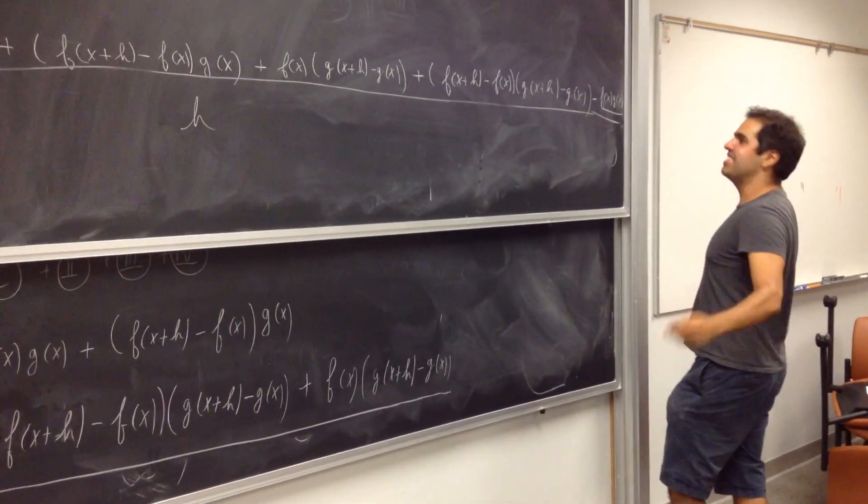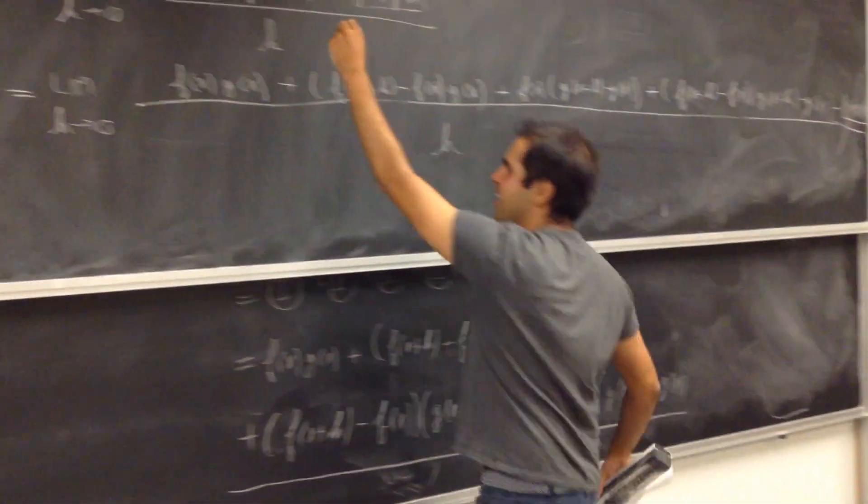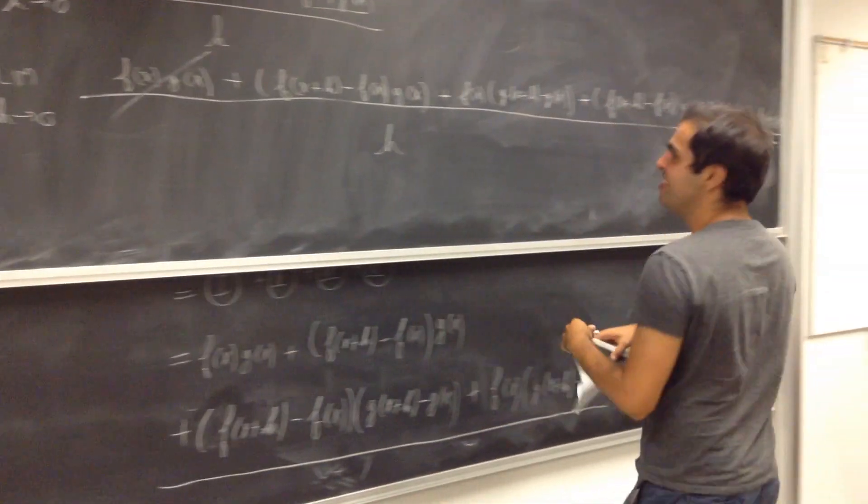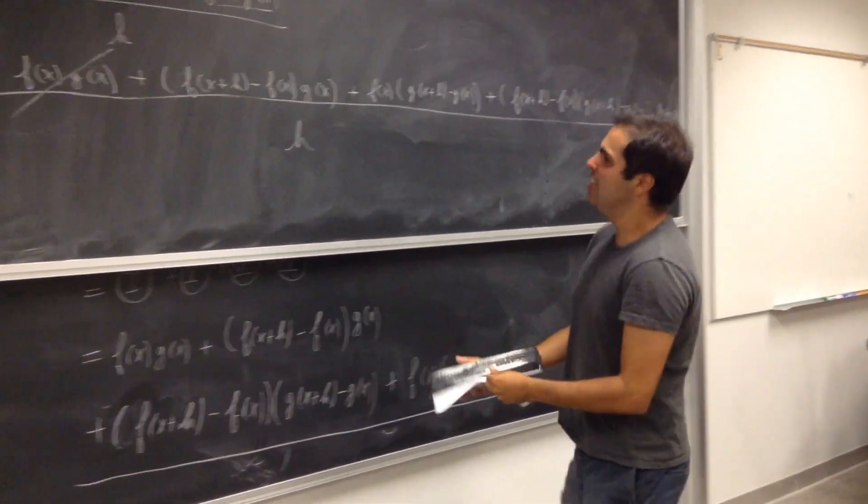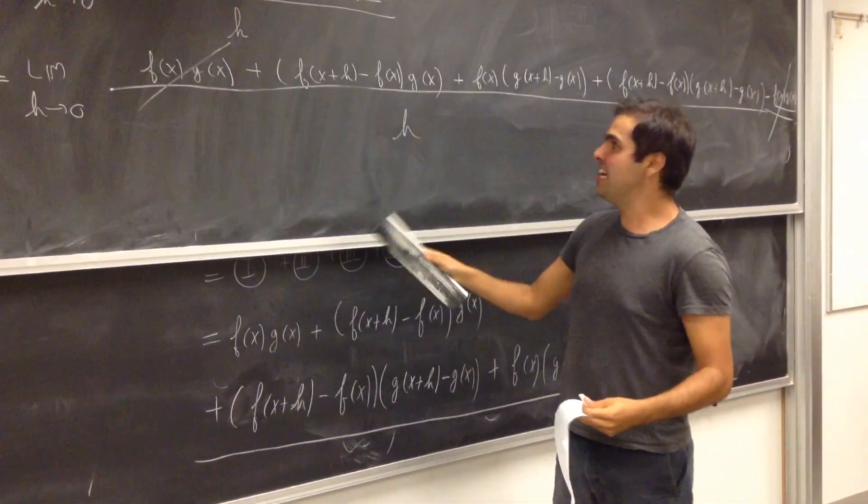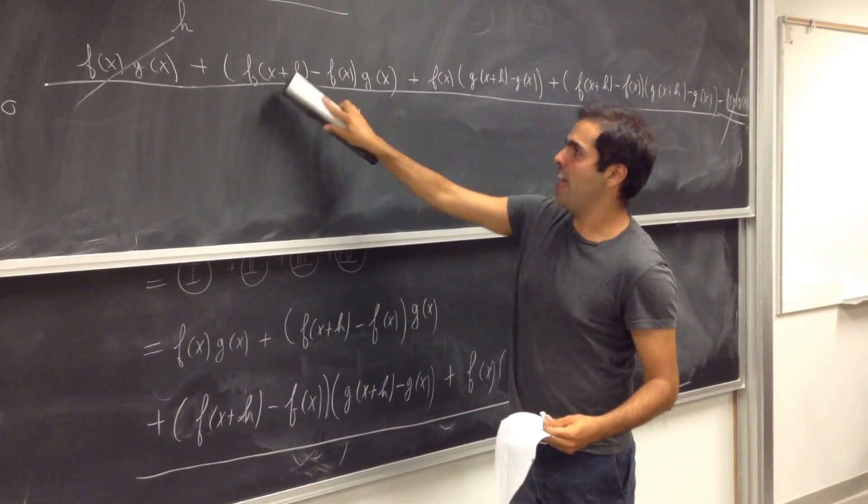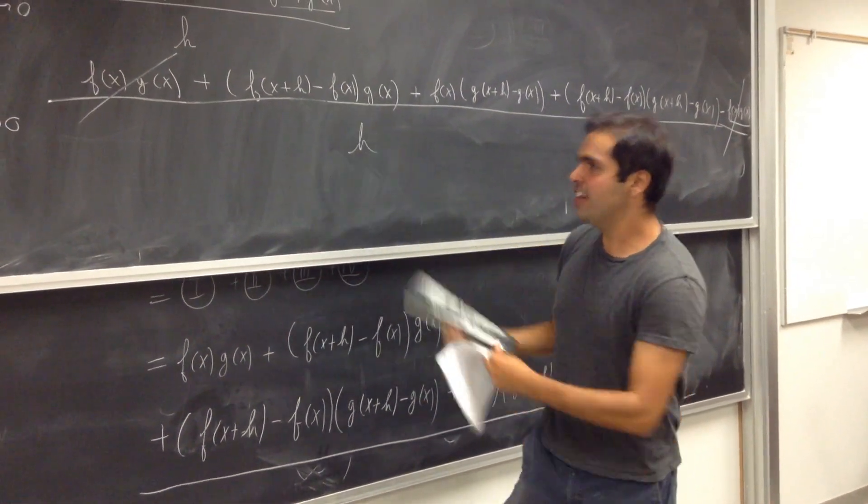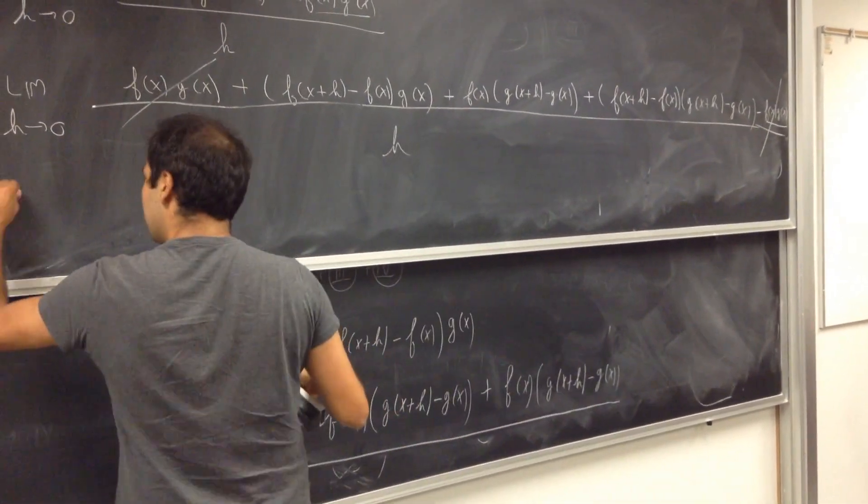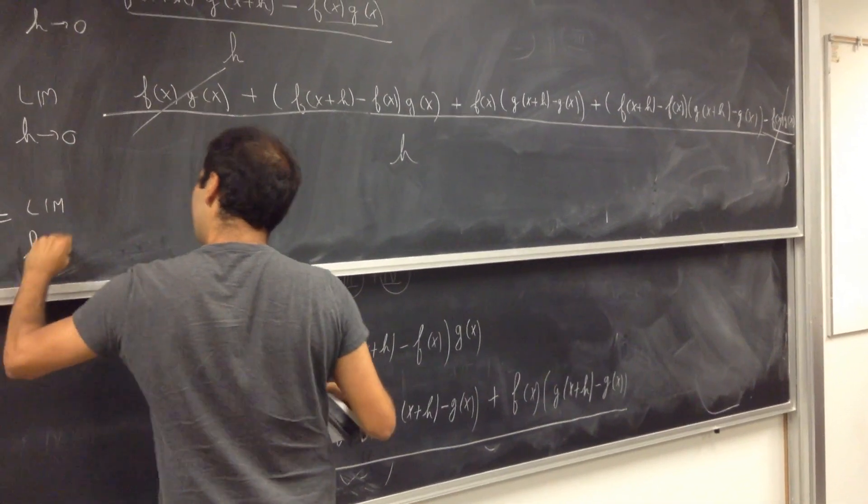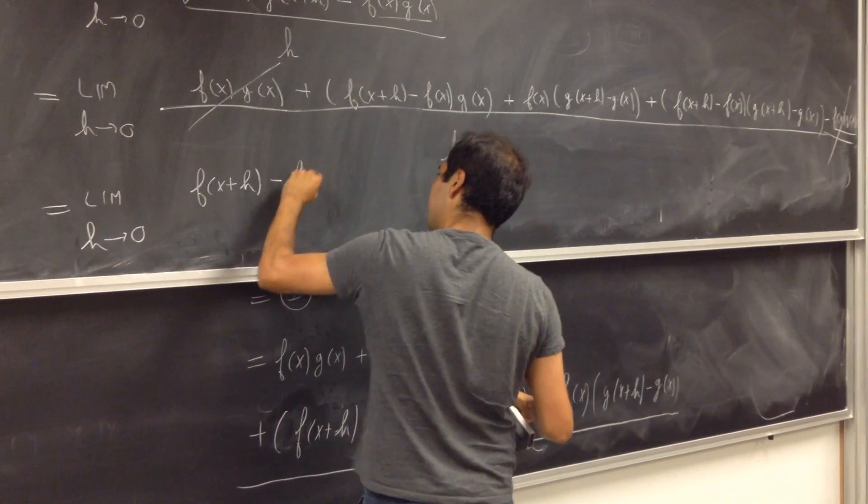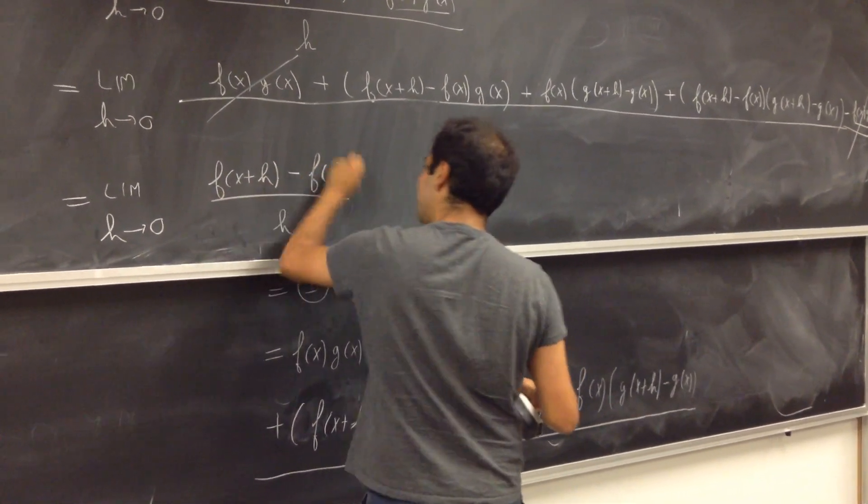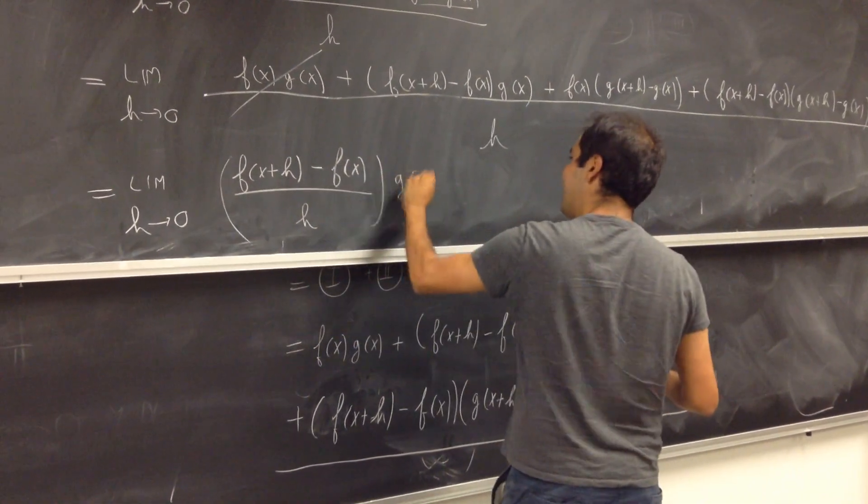And now the most exciting part of the proof: bang bang into the room. Now let's decompose this a little bit. Notice this is actually very good news, because here we have f of x plus h minus f of x divided by h. So on one hand here we have f of x plus h minus f of x divided by h times g of x.